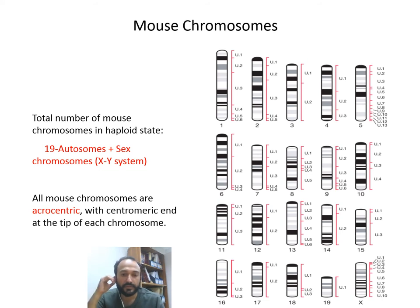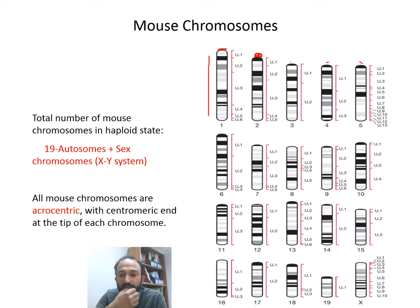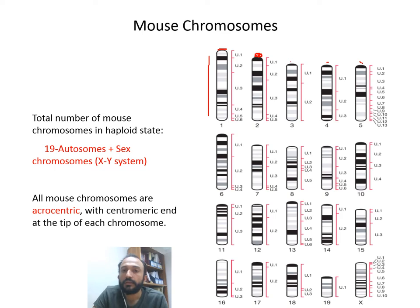The main interesting difference between human and mouse is in the chromosomes. The total number of mouse chromosomes in the haploid state is 19 autosomes plus sex chromosomes X and Y, while in humans there are 22 plus X and Y. All mouse chromosomes are acrocentric, meaning the centromere lies at the tip of the chromosome. This is one difference that may have occurred due to chromosomal breakage or other reasons we may explore in the evolutionary biology section.